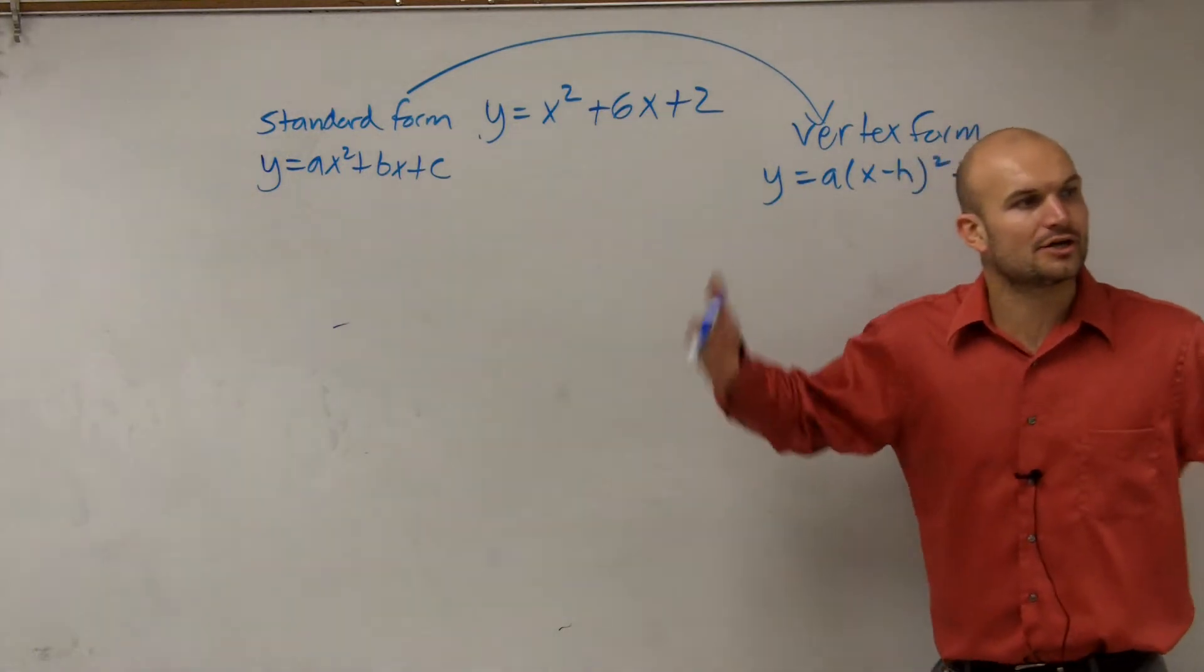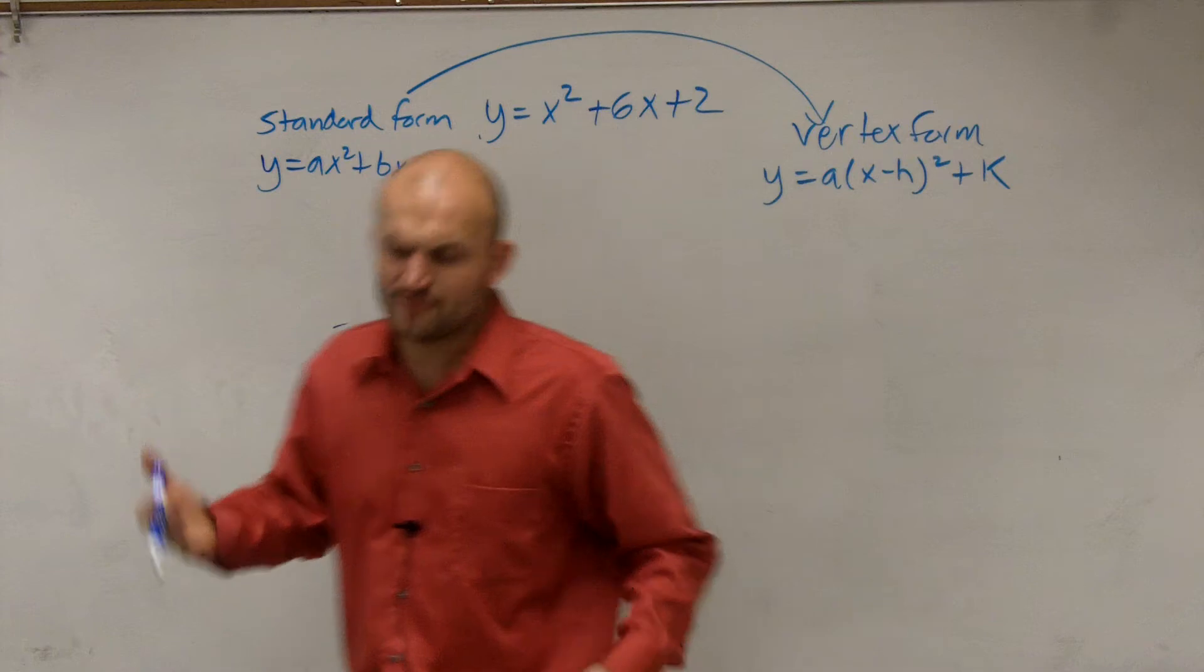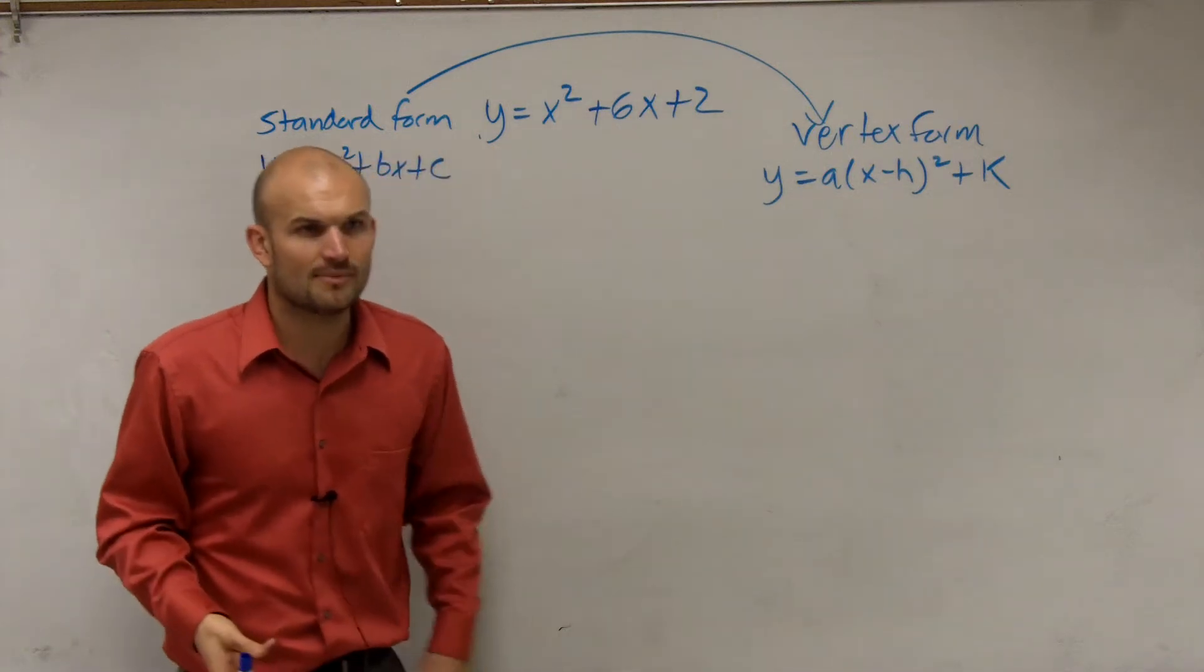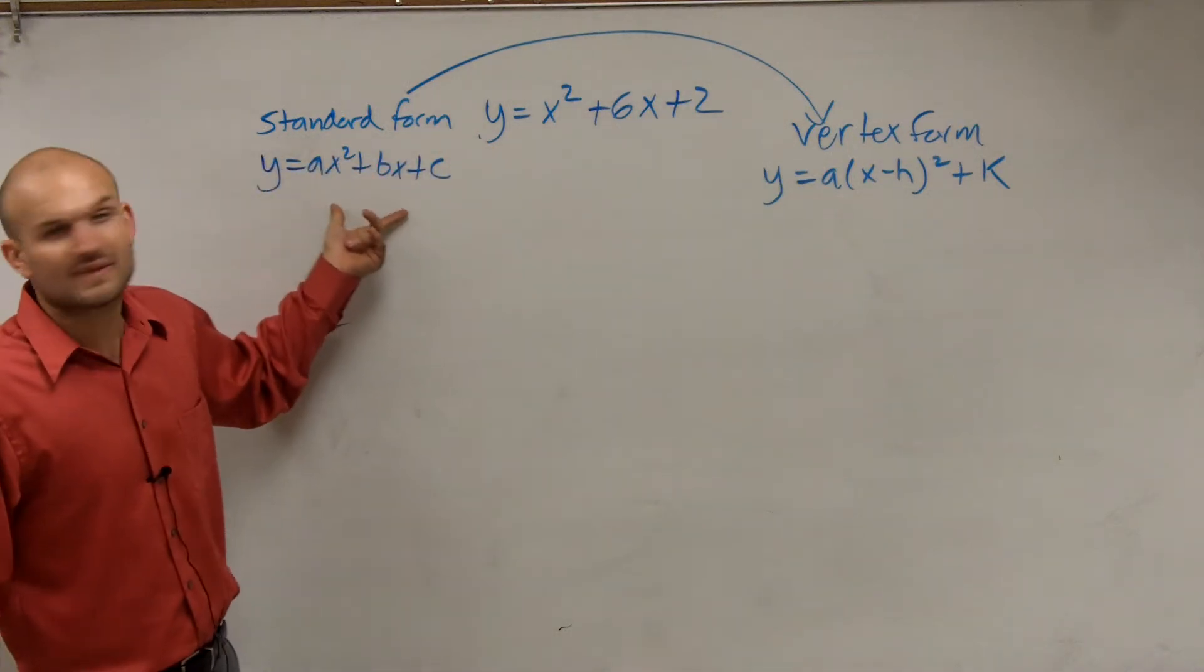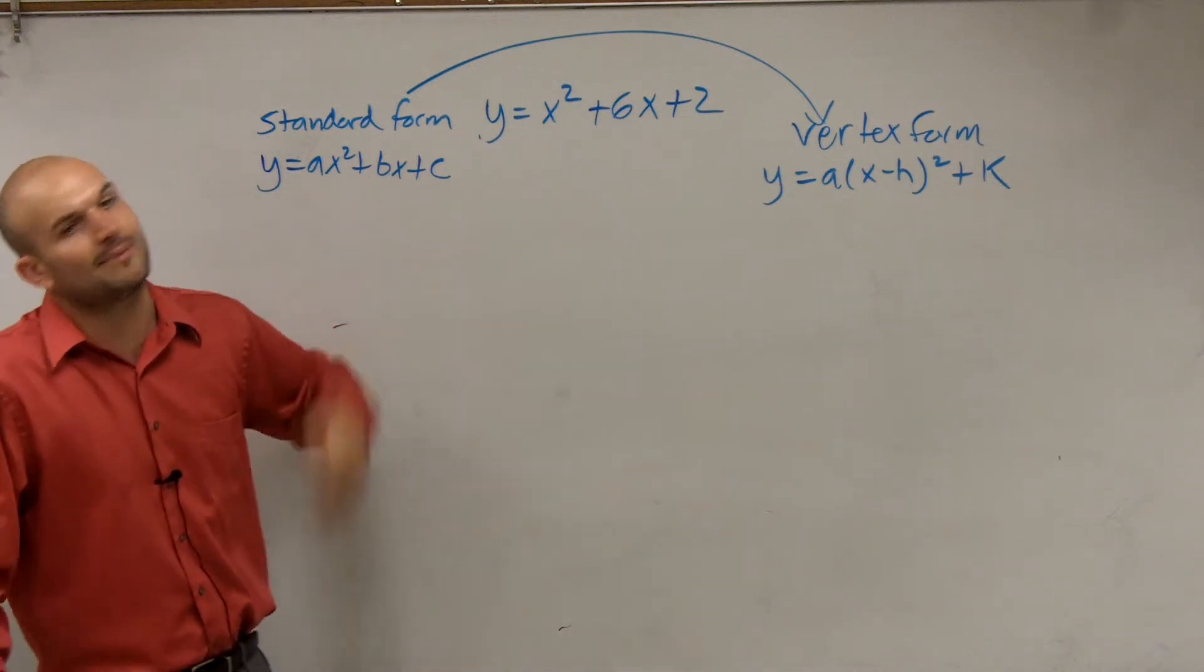There's a special way that we learn how to go from standard to vertex form. And again, I talked about this. Why do we even want to go to vertex form? Well, because to find a vertex of this, it kind of sometimes gets a little bit crazy. You have to do opposite of b, divide it by 2a,